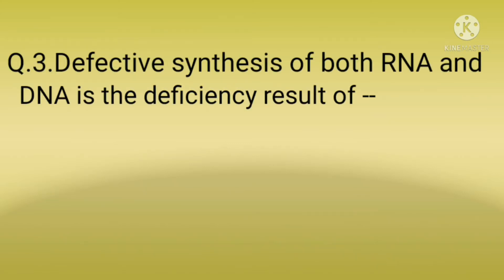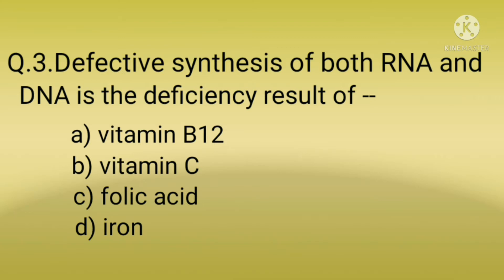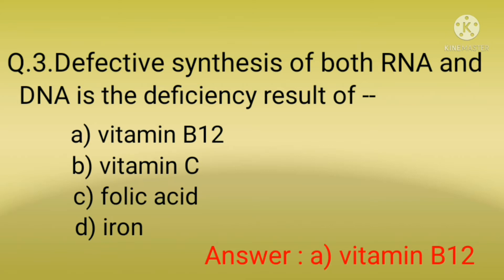Question number three: Defective synthesis of both RNA and DNA is the result of deficiency of which option? Options are: option A, vitamin B12; option B, vitamin C; option C, folic acid; option D, iron. The correct option is option A, vitamin B12. If the question asks about defective synthesis of DNA only, then the answer would be deficiency of folic acid. RNA is ribonucleic acid and DNA is deoxyribonucleic acid — these two are the most important molecules in cell biology, responsible for the storage and reading of genetic information.